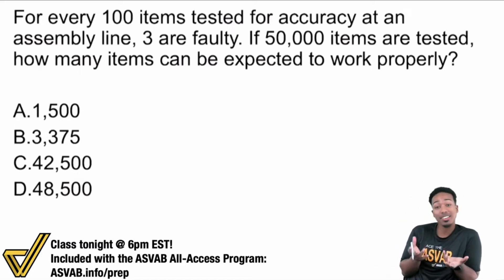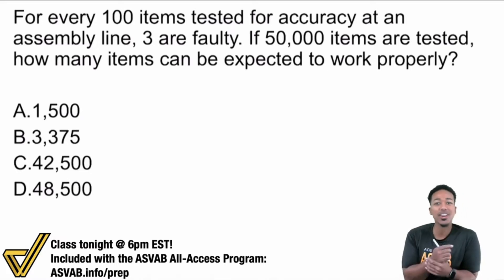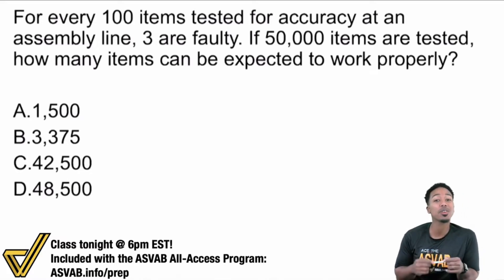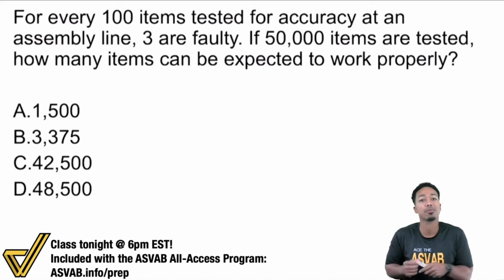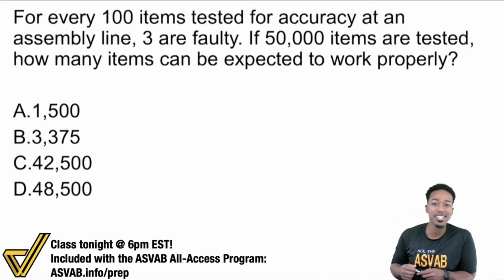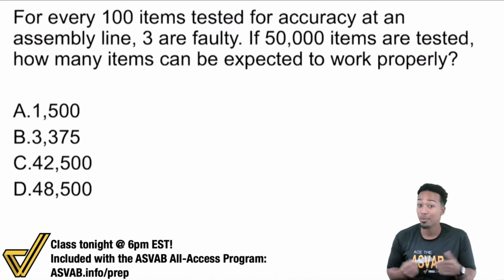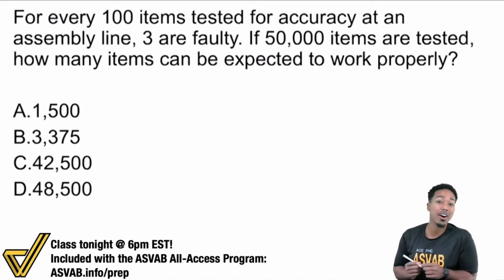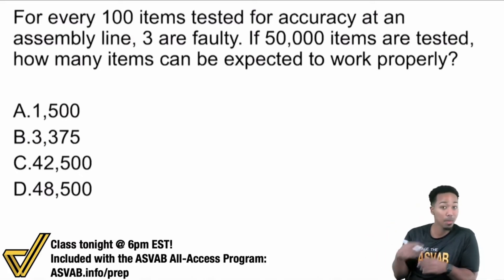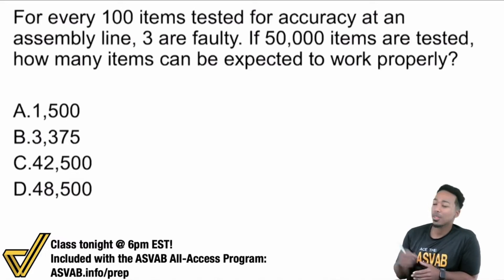Proportions come in a variety of different types of problems, but there's one cardinal rule you have to follow. I'm going to teach you that rule, but before we begin I want to make sure you know there is a class on this tonight at 6 p.m. Eastern. We're going to be going over proportions — all the types of problems, all the strategies — so you can have a better shot at acing the ASVAB and getting the military job you deserve. Remember, 8 out of 10 recruits fail the ASVAB their first time. Make yourself smarter every day and join. It's part of my ASVAB All-Access program. Check it out if you want to join, and let's have fun.